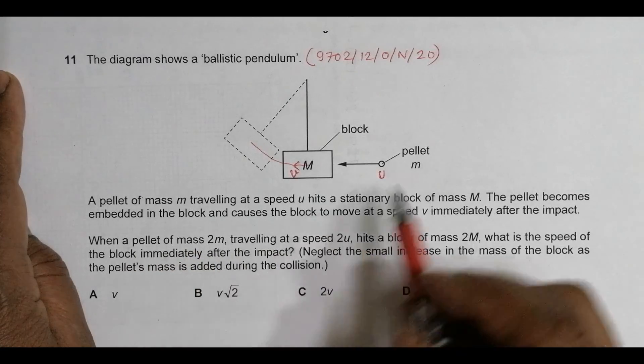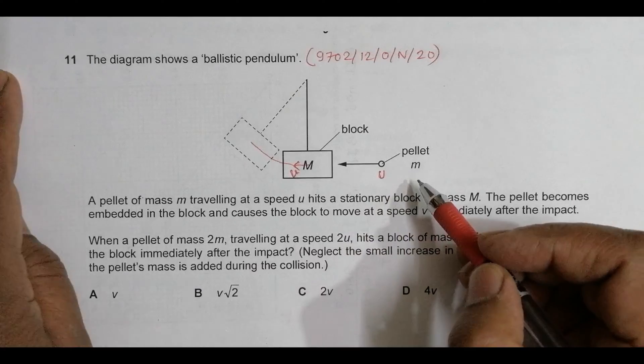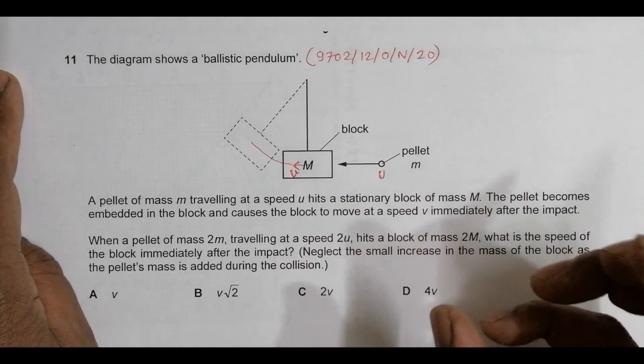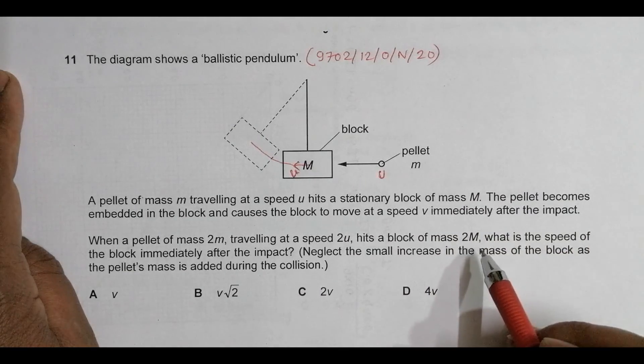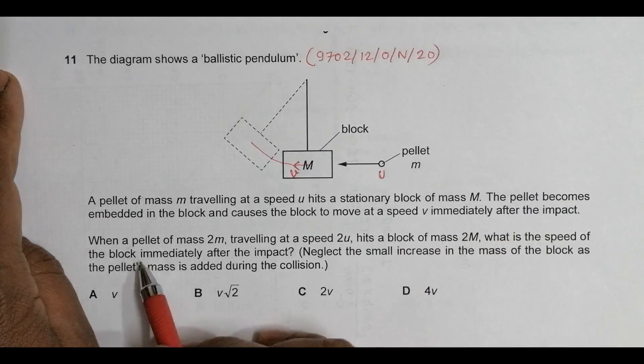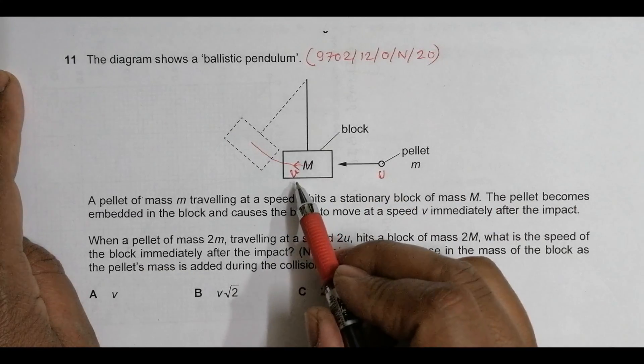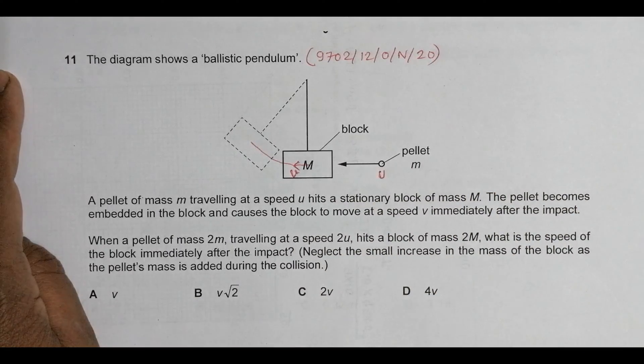When a pellet of mass 2m traveling at speed 2u hits a block of mass 2M, all quantities become twice. The question asks: what is the speed of the block immediately after the impact, and what happens to this velocity?